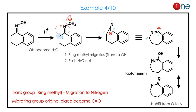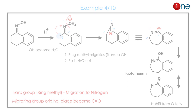In the next example, you have a fused system — one side benzene, another side cyclohexene — with an oxime. The trans group is again the ring carbon. It migrates, giving ring expansion from a 6-member to a 7-member ring. The trans group is the ring methylene group, and ring expansion happens here.